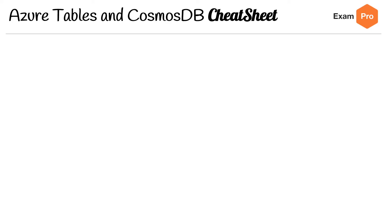Hey, this is Andrew Brown from ExamPro and we are on to the Azure Tables and Cosmos DB cheat sheet for the DP-900. I want to point out something that I'm sure you already know about, but in the course I spelled Cosmos DB without the S, like everywhere. And I'm not going to go back and fix that, but I know I'm going to hear never the end of it for like the next year.